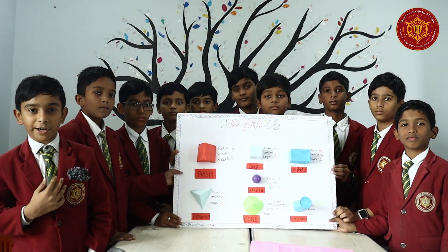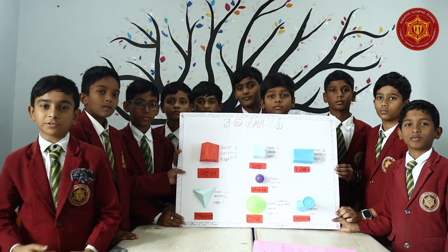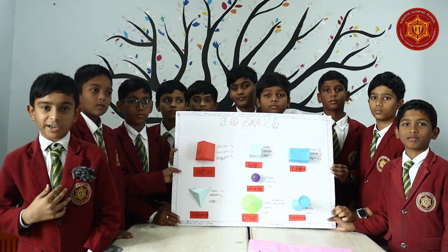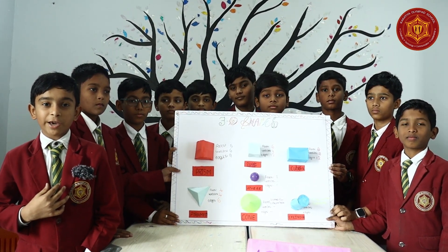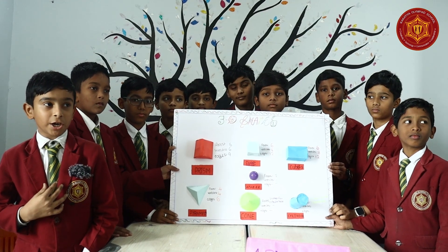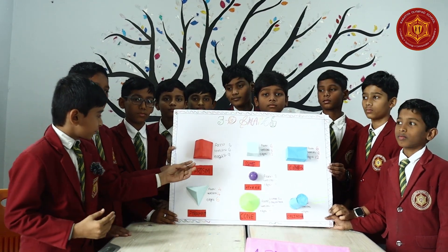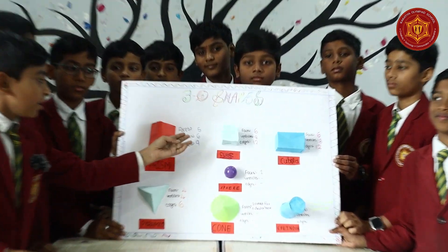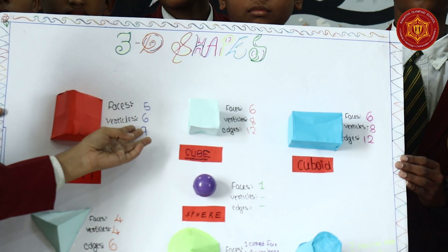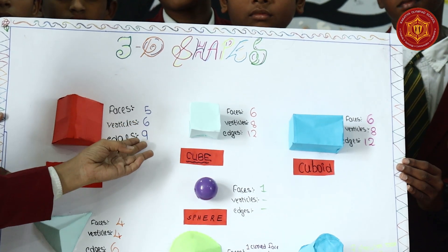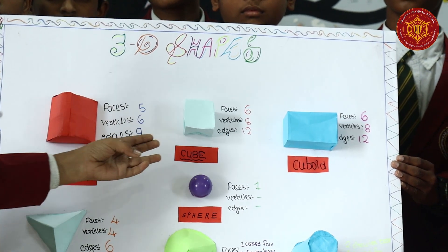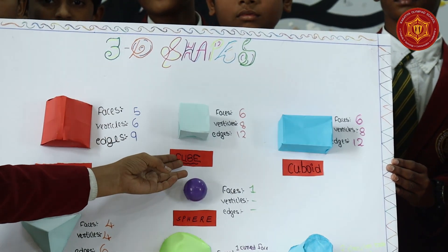Good morning everyone, my name is Krutika. I am studying in Siksha Tata in Yamuna campus. Today my topic is about 3D shapes. First, this is a prism and it has 5 faces, 6 vertices and 9 edges. And this is a cube.